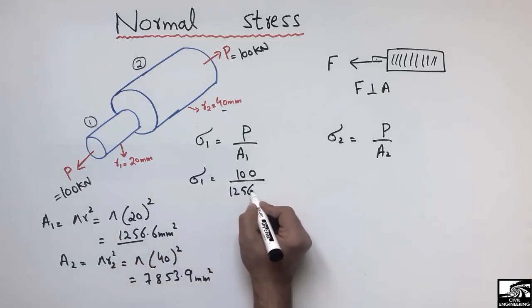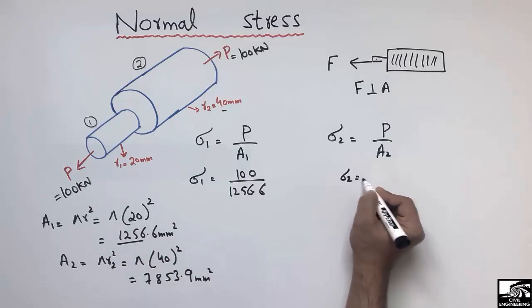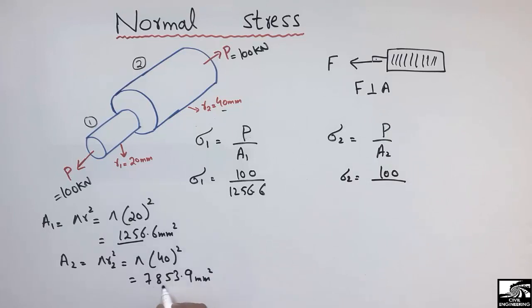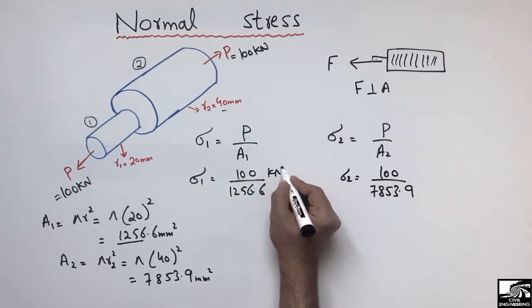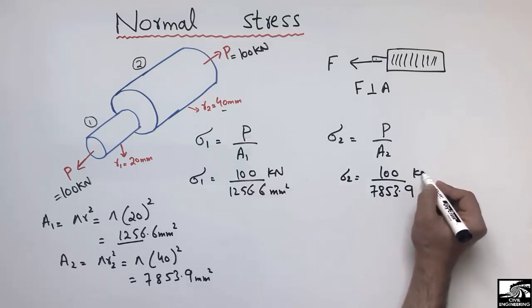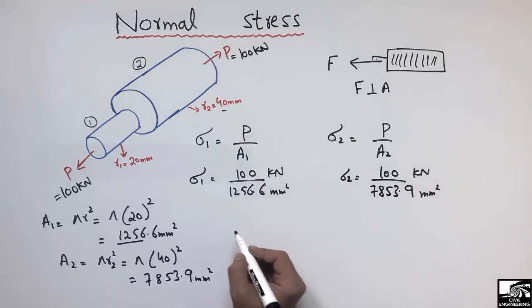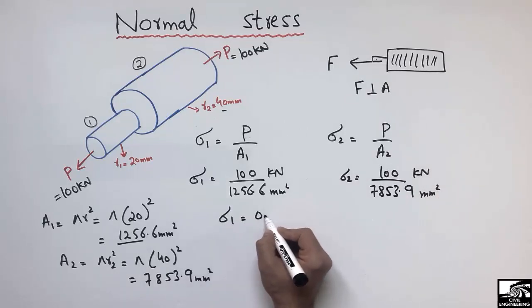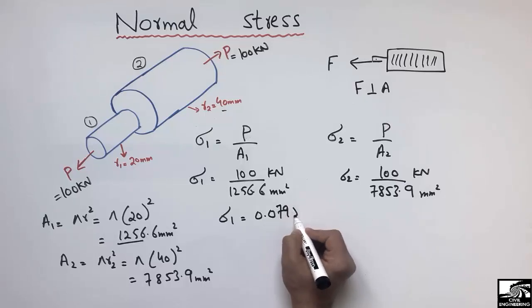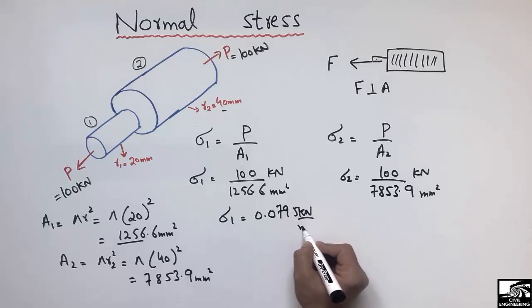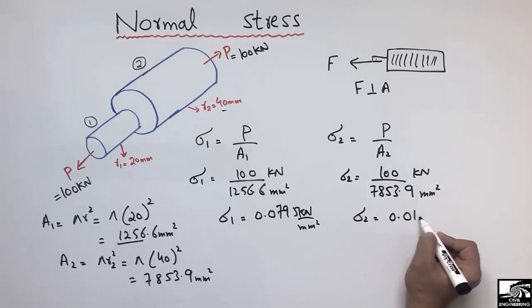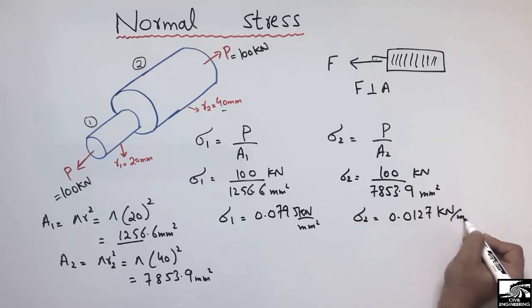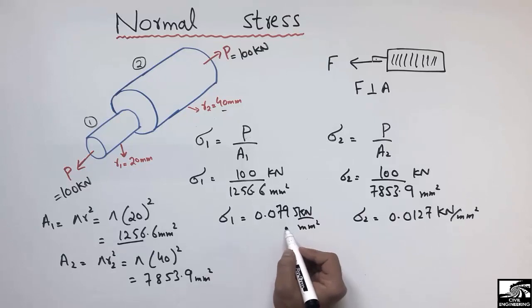Plugging in the values: σ1 = 100 kN / 1256.6 mm² and σ2 = 100 kN / 7853.9 mm². This gives σ1 = 0.0795 kN/mm² and σ2 = 0.0127 kN/mm².